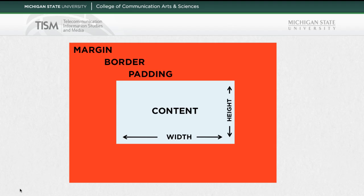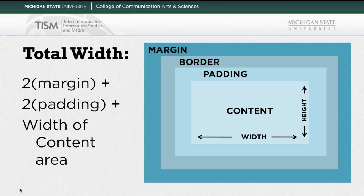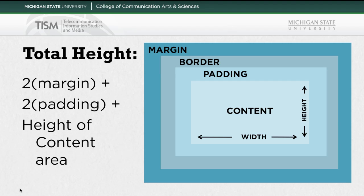One important thing to keep in mind is that with padding, border, and margin, adding these things adds to the total space you're going to take up, but they don't affect the amount of space within the content. To calculate the total width, you take 2 times the margin plus 2 times the padding plus the width of the content area. To calculate the total height, you take 2 times the margin, 2 times the padding, and add the height of the content area.